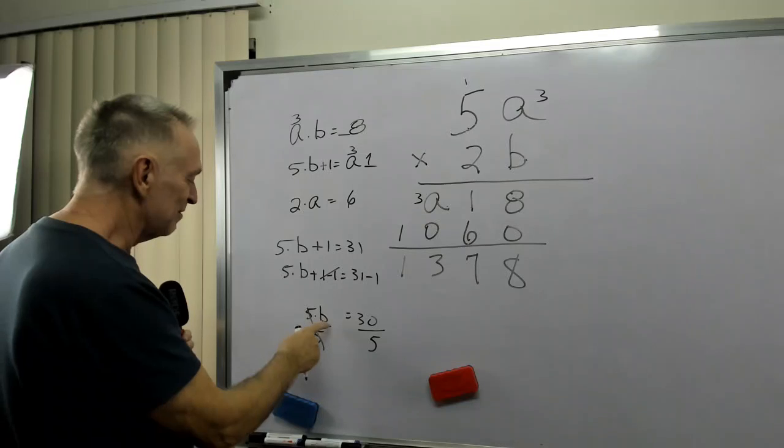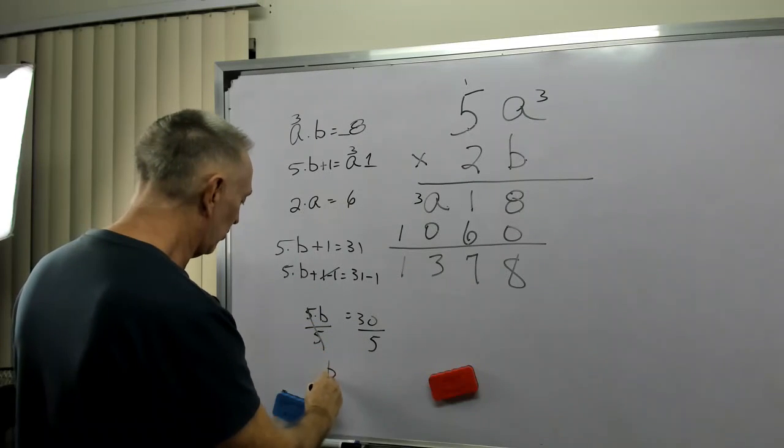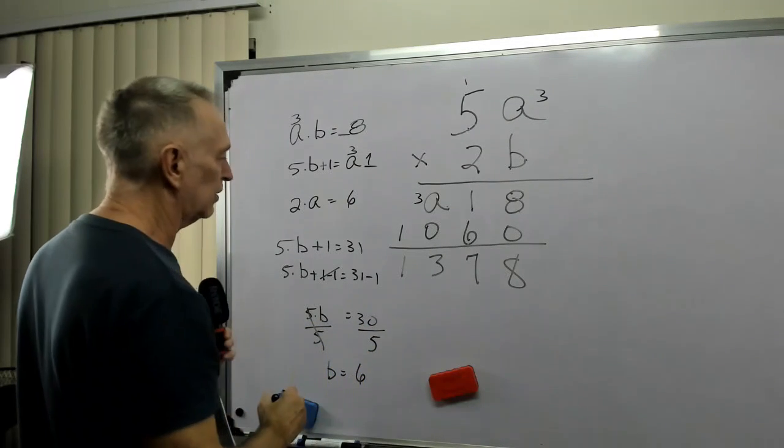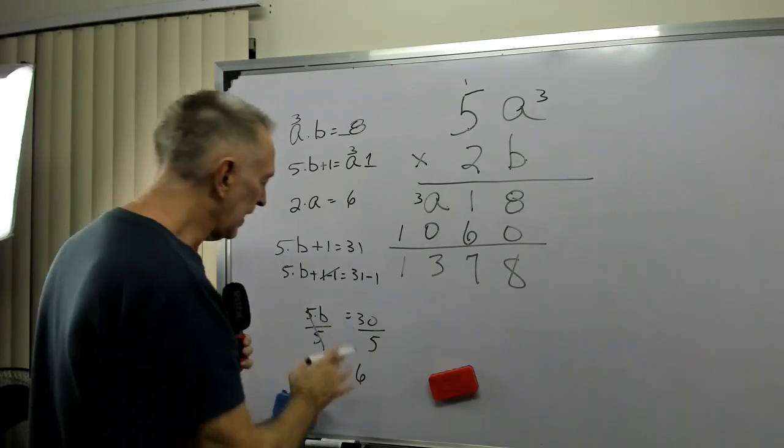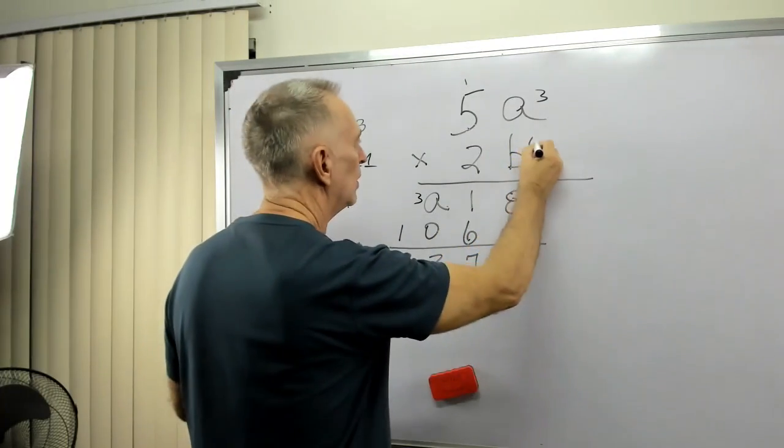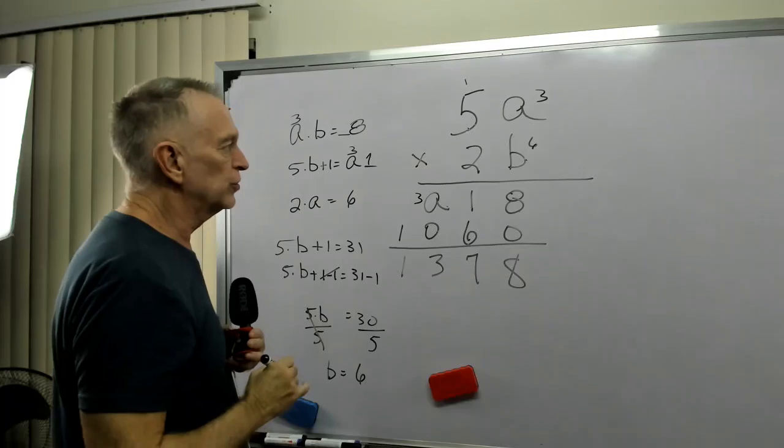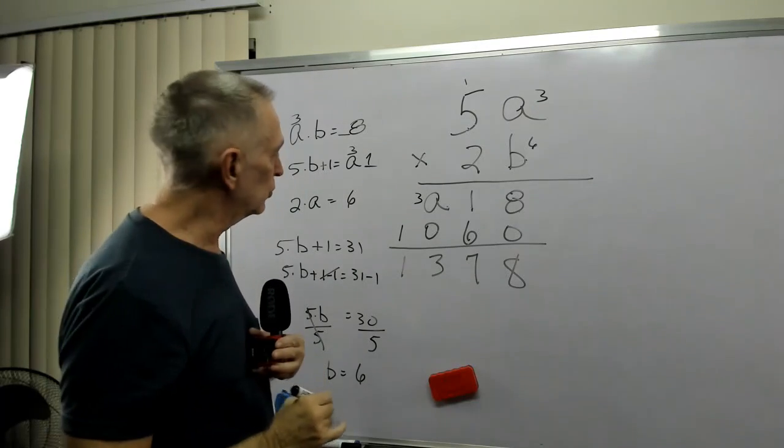Okay, B equals 30 divided by 5, which is 6. So, our thinking is that B equals 6, A equals 3.